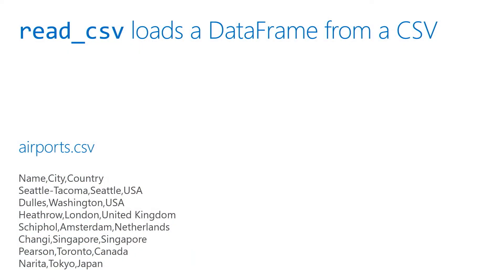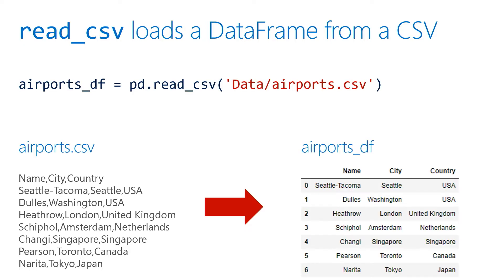The read_csv command is what we use to load a data frame from a CSV file. So let's say we have a file here which has name, city, country, and a list of airports. What we can do is simply call read_csv, pass it the name of that file, put it in our data folder that we created, and it creates the data frame for us.